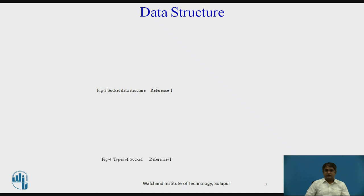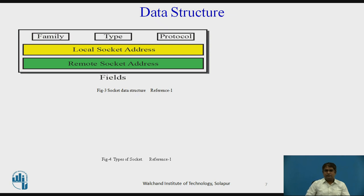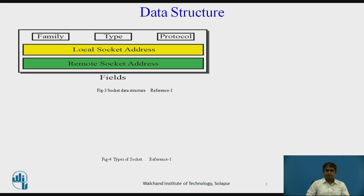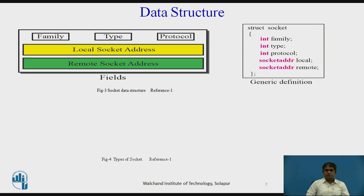Now, data structures. The format of the data structure to define a socket depends on the language used by the processes. Here, we are going to write the client-server code in C language. In C language, a socket is defined as a five-field structure. Note that the programmer should not redefine this structure — it is already defined in the system. The programmer needs only to use the header file that includes this definition. Let us briefly define the fields used in this particular structure.